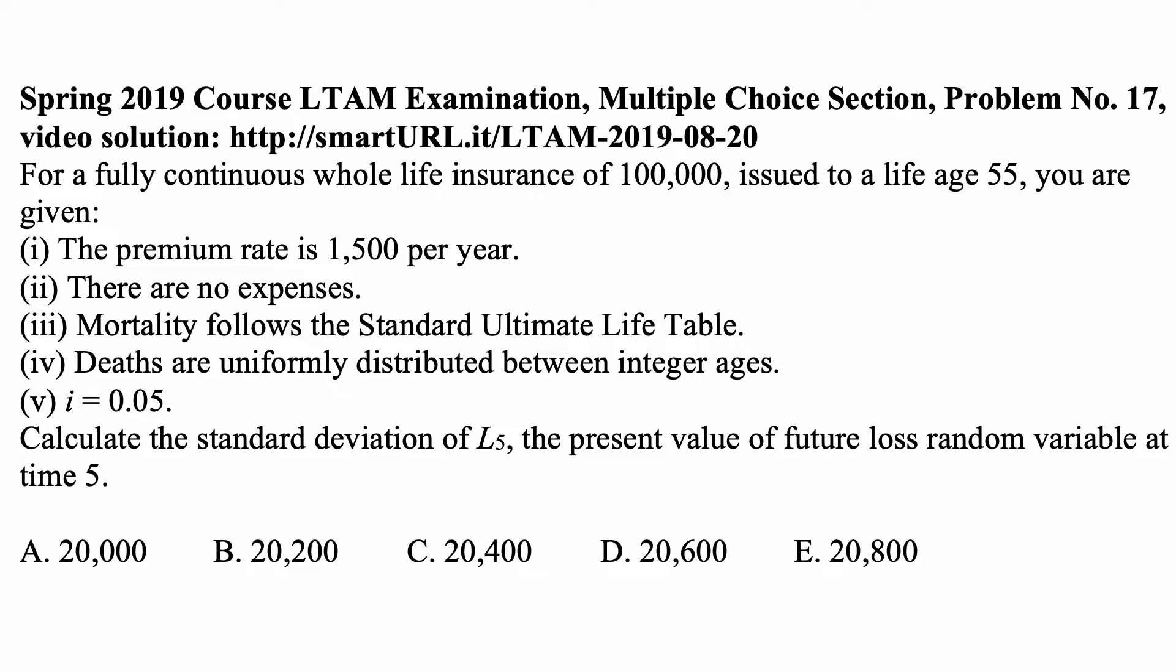The interest rate is 5%. Always remember that's the interest rate used for calculation of actuarial present values in the Standard Ultimate Life Table. You always want to check for consistency, because if a different interest rate is used, you can't use the actuarial present values from the table, but you can use the data about population size, mortality, and so on.